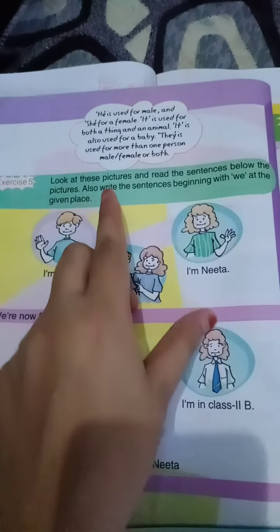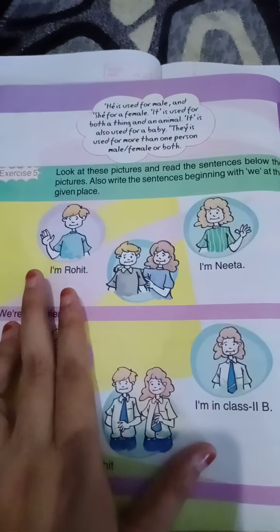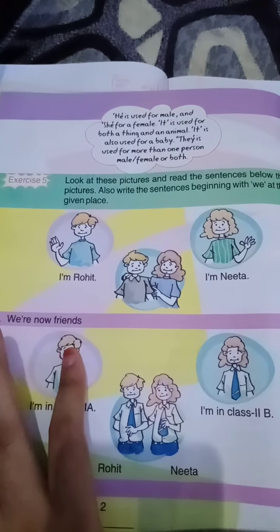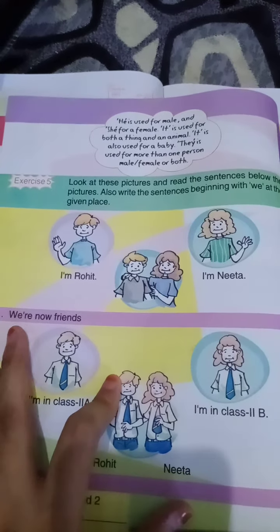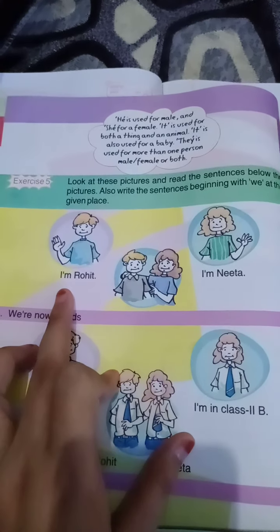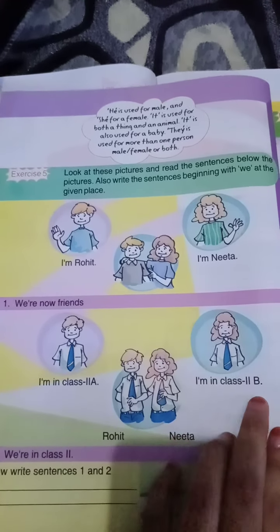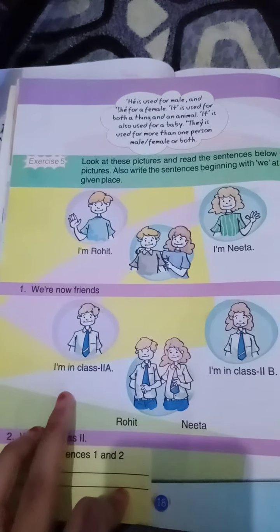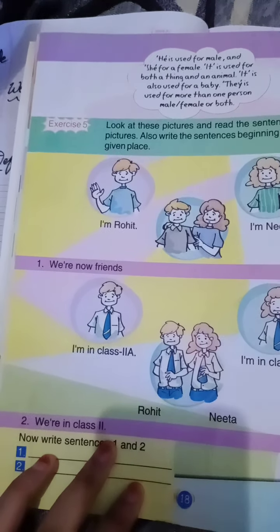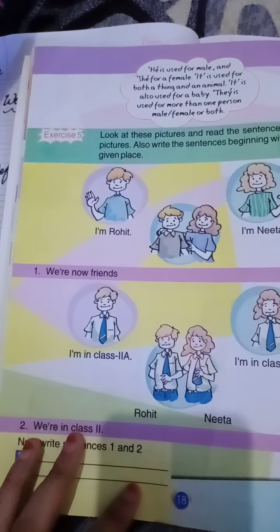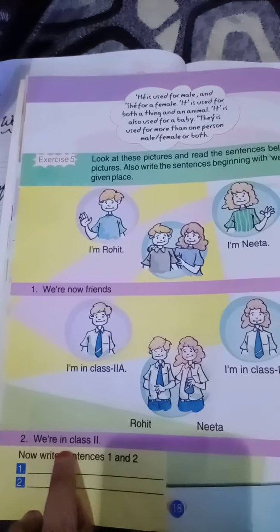I have told you where we use he, she, it, they, and where we use 'we'. 'We' means if I or me is included. For example, I am Rohit and I am Nita — when both combine, we will write 'we are friends'. Here 'I' is included, so instead of writing naming words, we will write the pronoun 'we'. We are in class second.